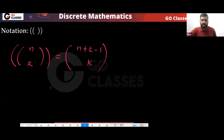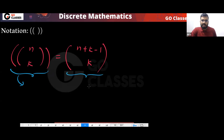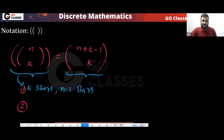What is the combinatorial argument for this value N+K−1 C K? Basically, you have K stars and N−1 bars.